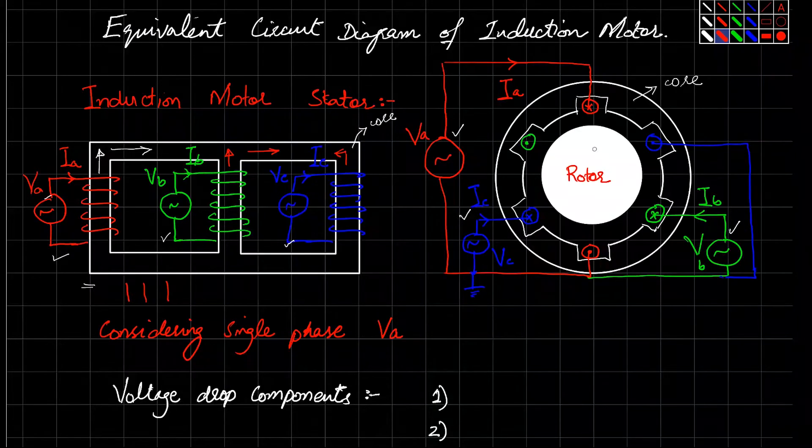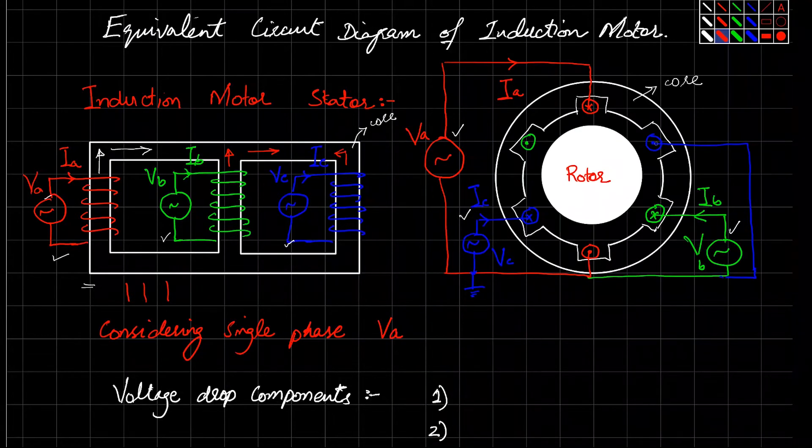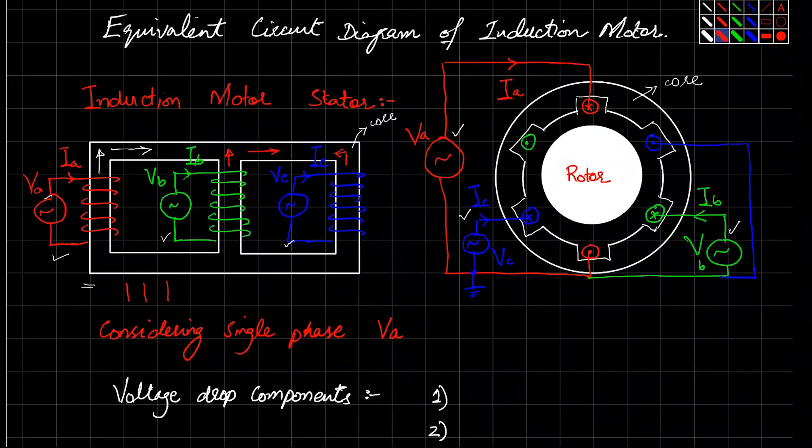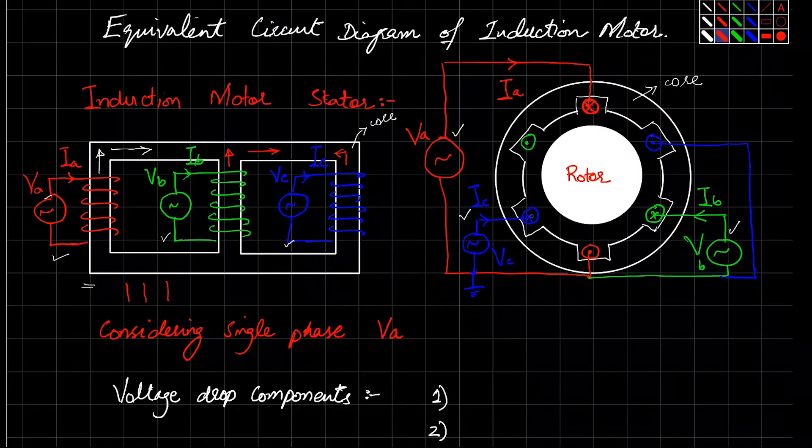Whereas in the three-phase induction motor, the winding is placed 120 degrees out of phase. For example, VA is drawn here, then at 120 degrees displacement you have the second phase, and you have the third phase that is 120 degrees displaced from the B phase.